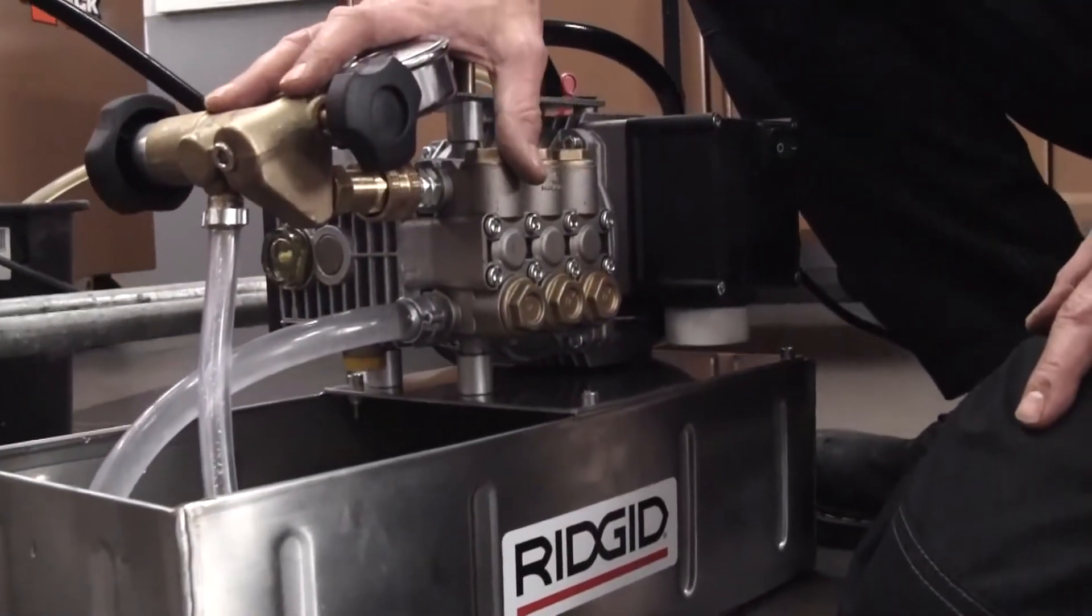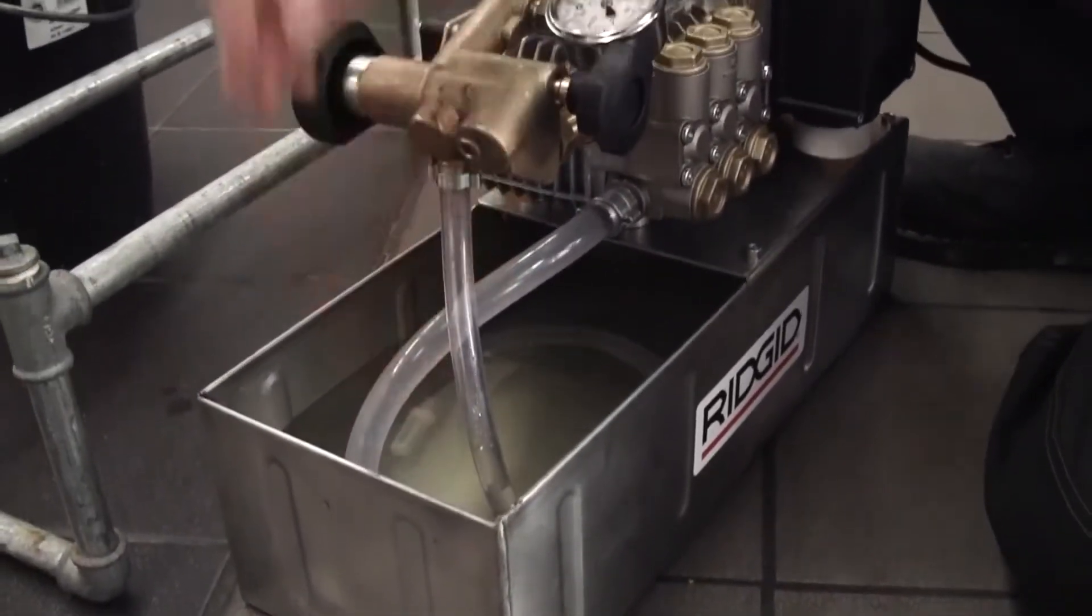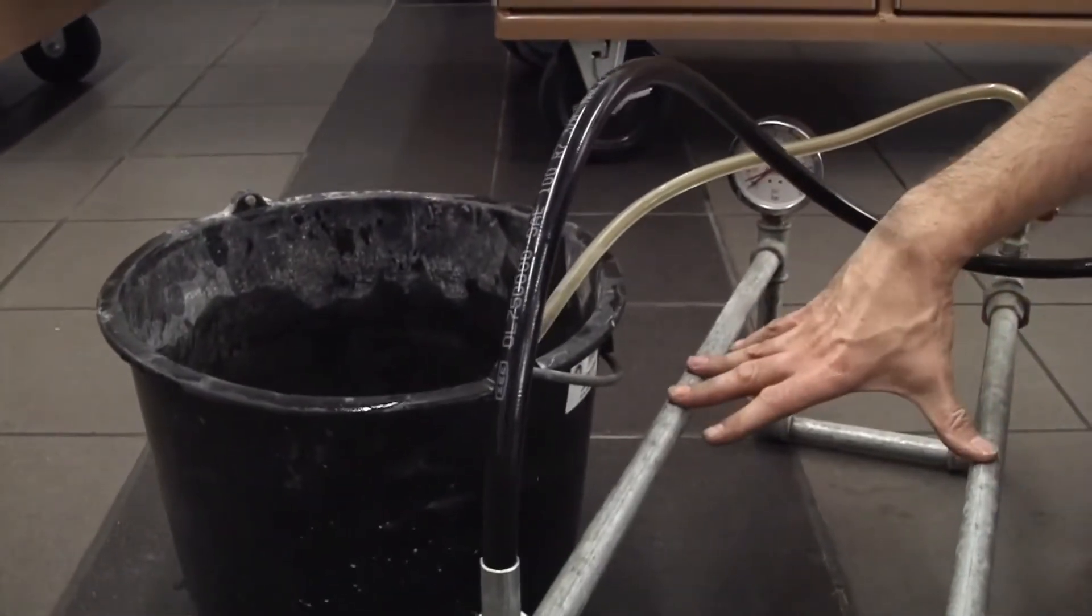So here's the 1460E. In the bucket we filled it with fresh clean water. We've connected the high pressure outlet hose to a little bit of pipe work here.